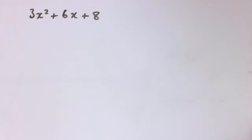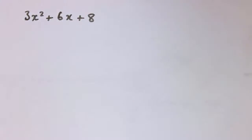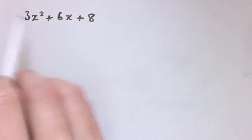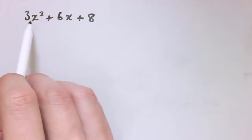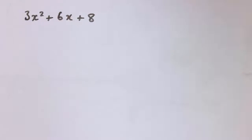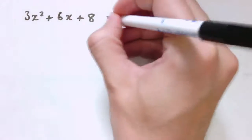In this video I'm going to look at completing the square for non-monic quadratics. Look at the video for completing the square for monic ones first if you haven't already. Non-monic just means that the x squared coefficient isn't 1. I want to put this in completed square form, and the completed square form is going to look slightly different for non-monic ones.